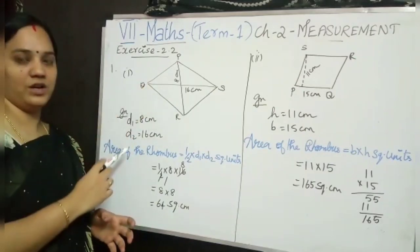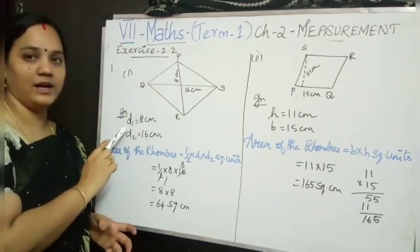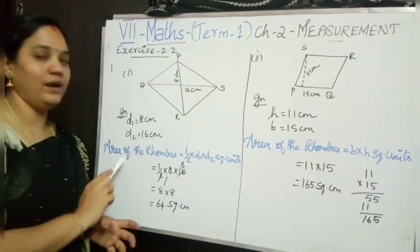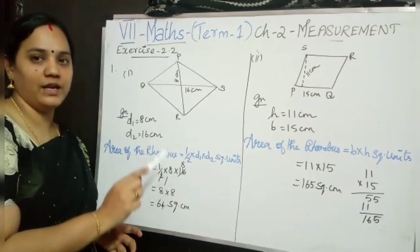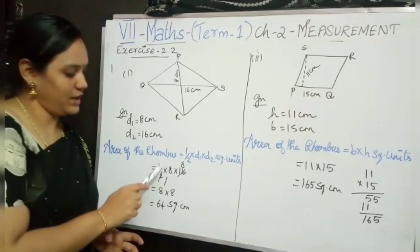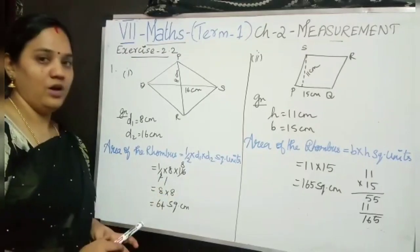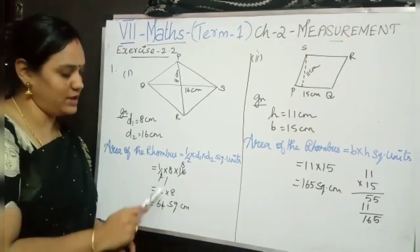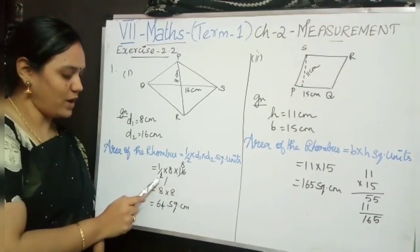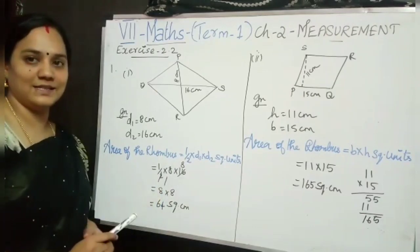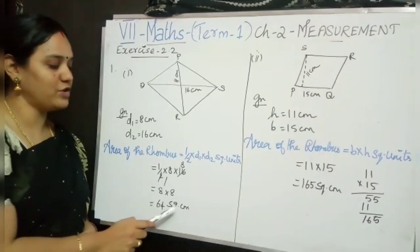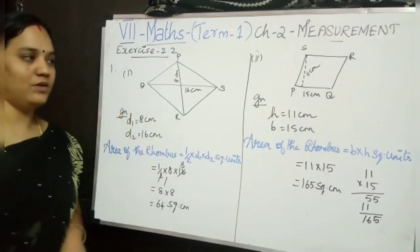Whatever is given in the picture I have written here. So diagonal 1 is taken as D1 as 8 cm and D2 as 16 cm. While finding out the area of the rhombus, we use the formula half into D1 into D2. So here half into D1 is 8 and D2 is 16. Both the numbers are even numbers, so we can cancel using 2. Using 2 table I have cancelled the 16 — 1 2s are 2, 8 2s are 16. Balance we have 8 into 8; 8 8s are 64. So 64 square centimetre is our answer.